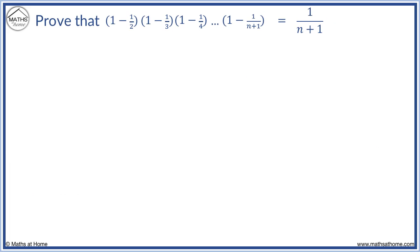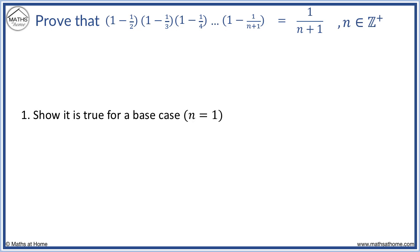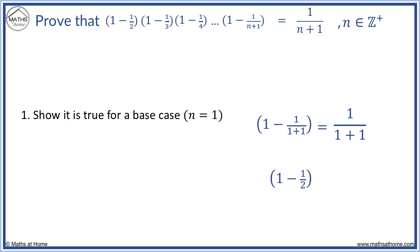Here is an example. This proof is only valid for positive integer values of n, so we write this symbol where the z plus means positive integers only. Step 1 is to prove the base case by taking n equal to 1. When n equals 1, we have 1 minus 1 over 1 plus 1 on the left, and we substitute n equals 1 on the right to obtain 1 over 1 plus 1. We get 1 half equals 1 half, and so the base case is true.